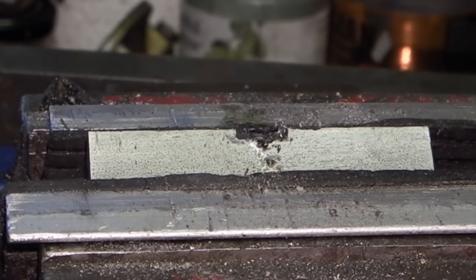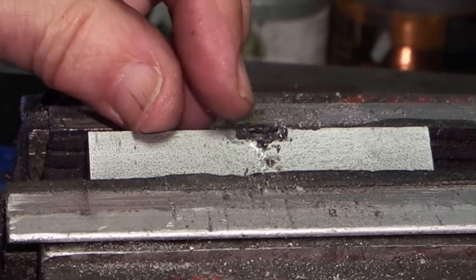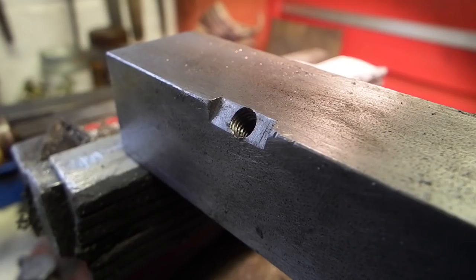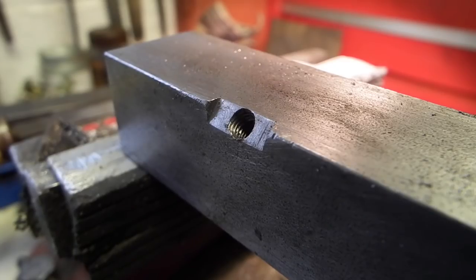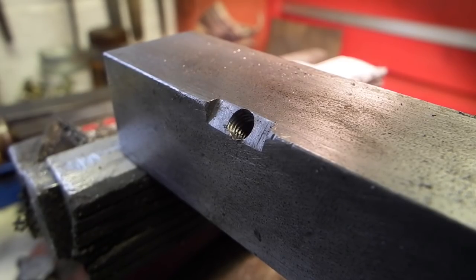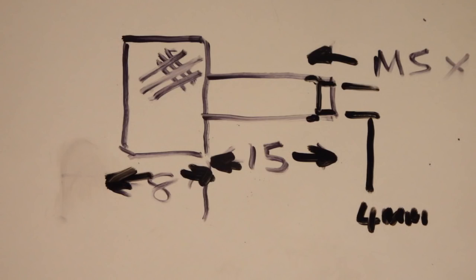I've now tapped that 5mm and I'll just take these sharp edges off. Now that holds for a 5mm thumb screw, so let's make the thumb screw.